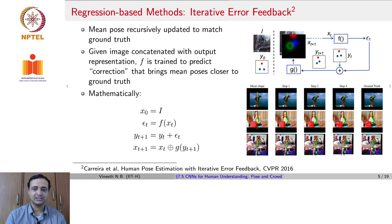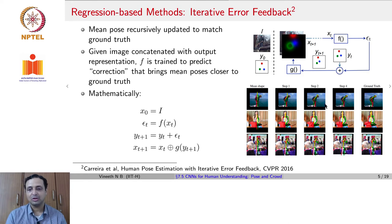Visually, in one example the mean pose of a person standing upright is overlaid on an image, and in every step the mean pose is adjusted toward the ground truth. After four steps, the predicted pose becomes close to the ground truth. Another example shows the mean standing pose converging over a few steps to the pose of a person squatting at a particular location.